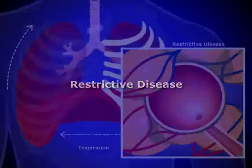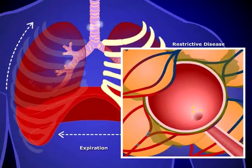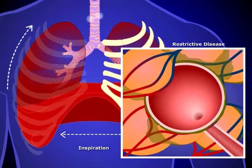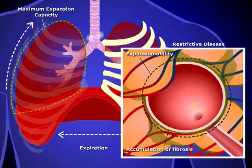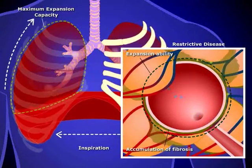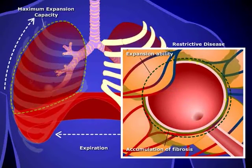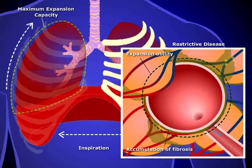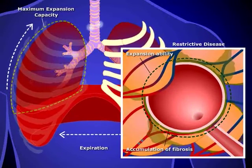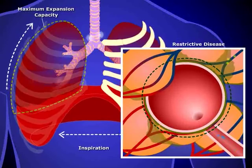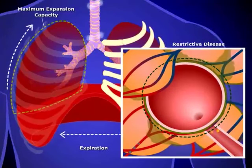Now that we've discussed the normal mechanics of respiration, let's turn our attention to restrictive diseases. In restrictive pulmonary diseases, such as fibrosis, lung expansion is limited. The normal maximum expansion of the lungs is represented here by dotted green lines. It is evident that in this disease, the lungs are not able to reach their normal capacity. Without proper expansion, the lungs cannot fully increase in volume. As a result, without a sufficient decrease in pressure, the normal amount of air cannot enter the lungs. Therefore, patients with restrictive pulmonary disease have problems with inspiration.